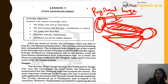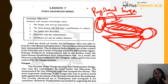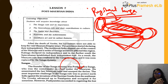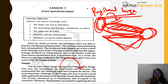The founder of the Sunga dynasty was Pushyamitra Sunga, who was actually a commander-in-chief in the Mauryan army. He assassinated the last Mauryan ruler and usurped the throne. The most important challenge for Sunga rule was protecting the north Indian empire from invasions from the northwest, east, and south.